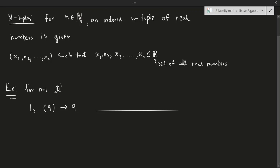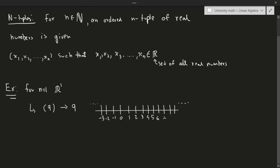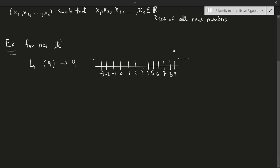For example, if I were to write a number line — marking 0, 1, 2, 3, 4, 5, 6, 7, 8, 9, and then -1, -2, -3, and so on — the number 9 would just be located right there on the line. That's all this example is saying. R1 is just a number line, and a 1-tuple is simply a single real number placed on that line.